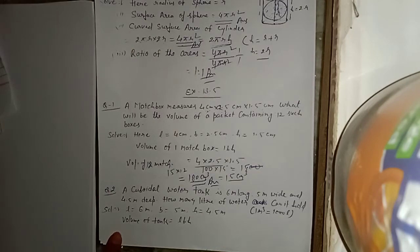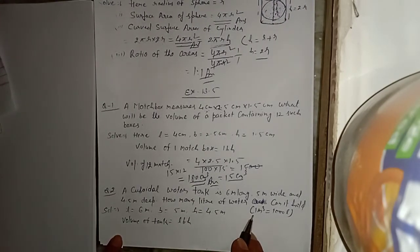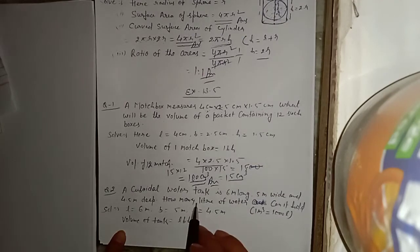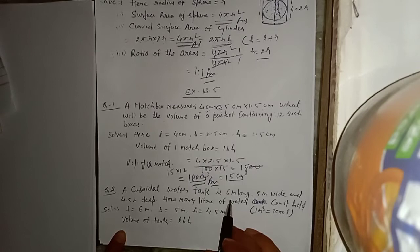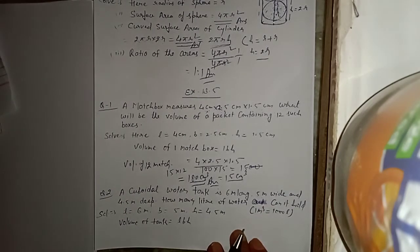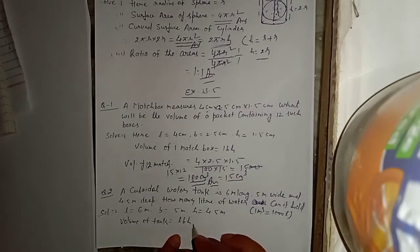Question number 2: A cuboidal water tank is 6 metres long, 5 metres wide, and 4.5 metres deep. How many litres of water can it hold? यानि इस tank में कितने litre पानी आ सकता है। l = 6 m, b = 5 m, h = 4.5 m। Volume of tank = l × b × h।